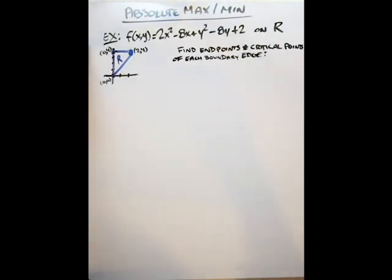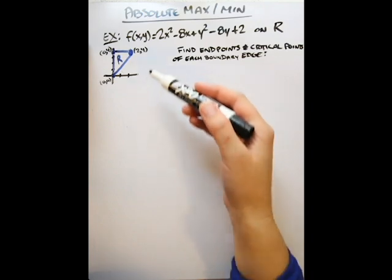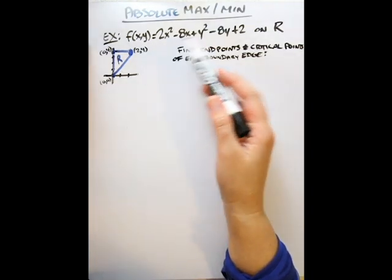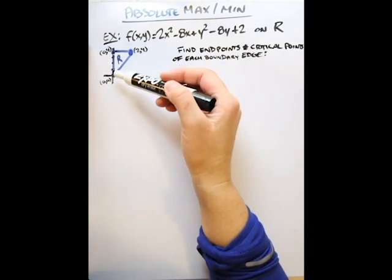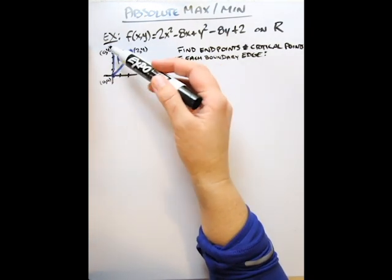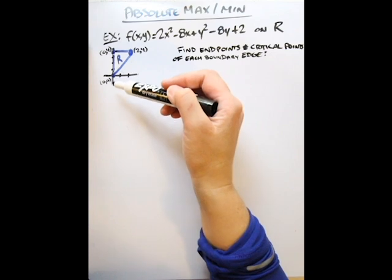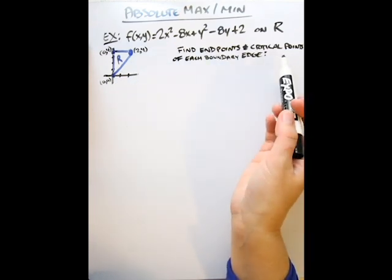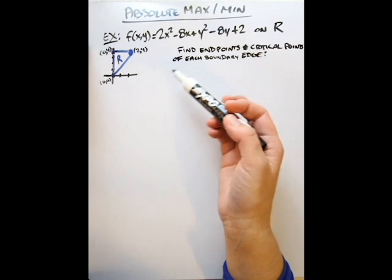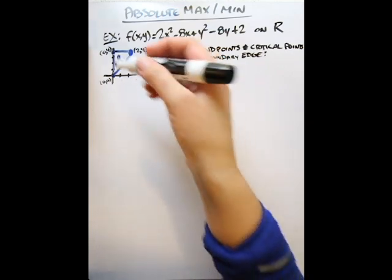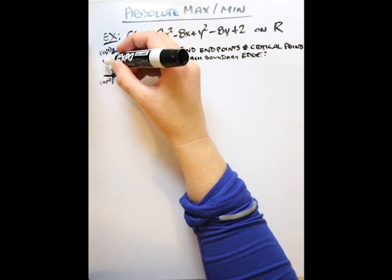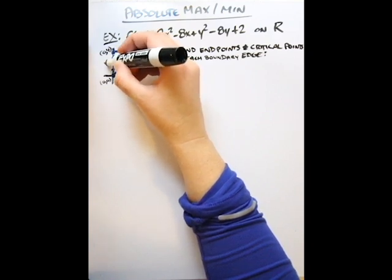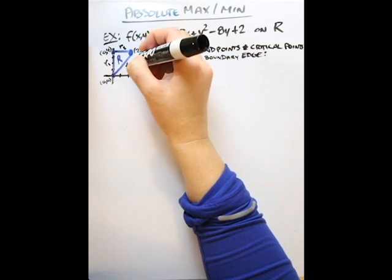We'll use the same example function, now defined on region R — a triangular region with vertices (0,0), (2,4), and (0,4). We have to find the endpoints and critical points for each boundary edge. I'll label the three edges r1, r2, and r3.